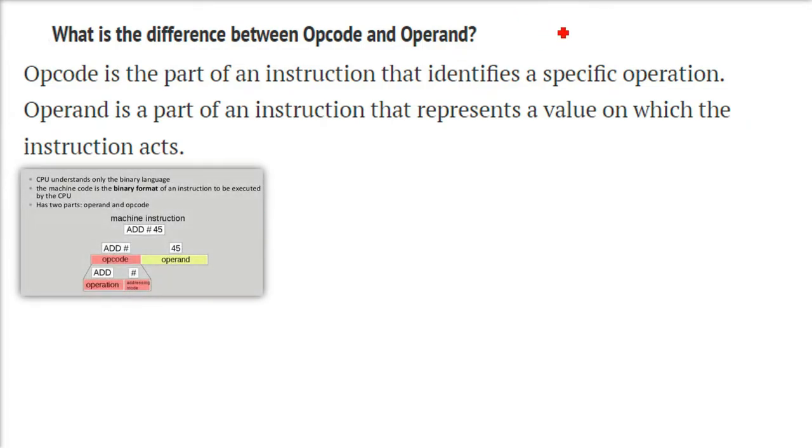Any system, any computer, they only understand because they are binary. They only know 0 and 1. So CPU only understands the 0-1 language that is called the binary language. So the machine code is the binary format of an instruction that will be executed by CPU.